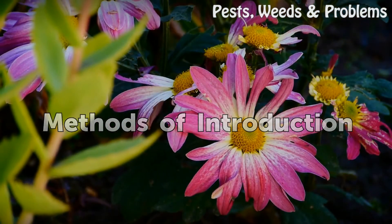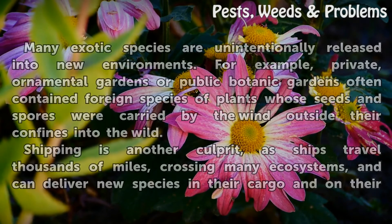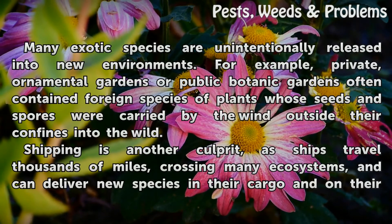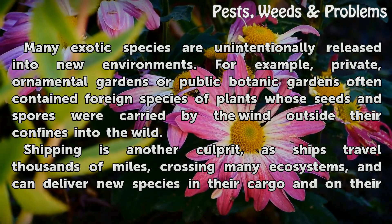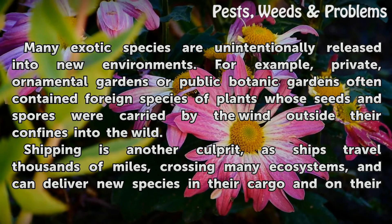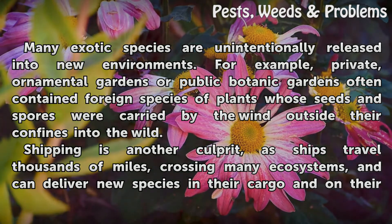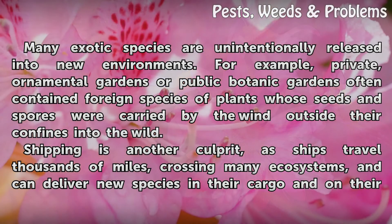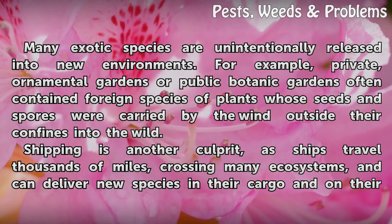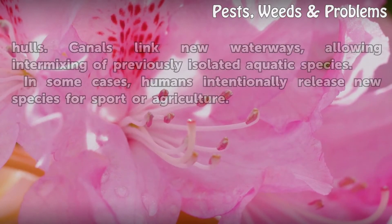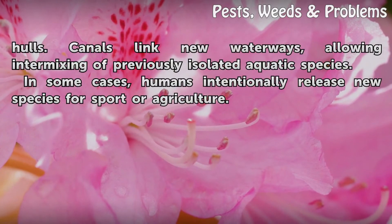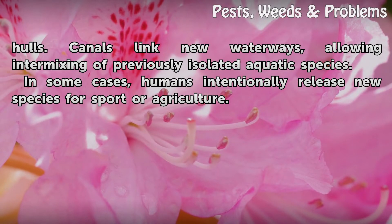Methods of Introduction. Many exotic species are unintentionally released into new environments. For example, private ornamental gardens or public botanic gardens often contain foreign species of plants whose seeds and spores were carried by the wind outside their confines into the wild. Shipping is another culprit, as ships travel thousands of miles, crossing many ecosystems, and can deliver new species in their cargo and on their hulls. Canals link new waterways, allowing intermixing of previously isolated aquatic species.